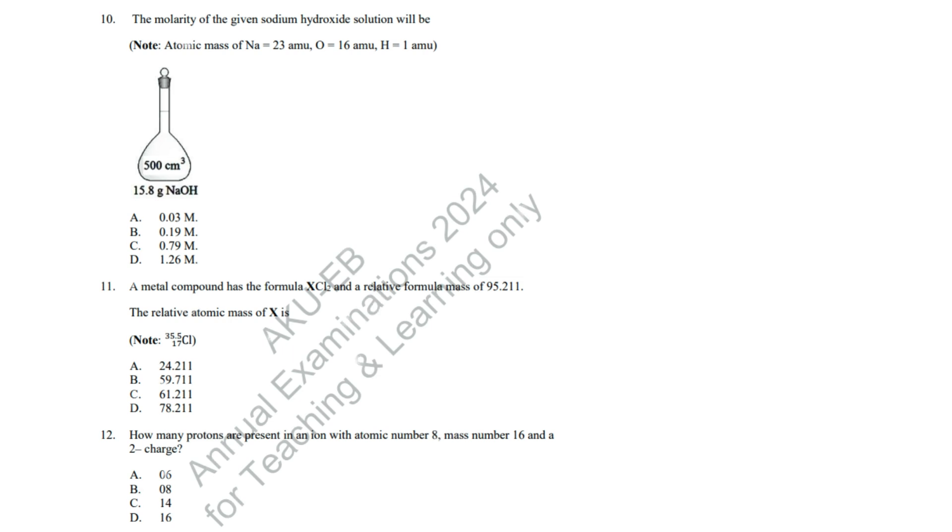Question 10: Molarity is calculated using moles of solute per liter of solution. Correct answer: B, 0.19 M. Question 11: Using the formula mass equation, X plus 2 times 35.5 equals 95.211. Solving for X gives 24.211. Correct answer: A, 24.211.